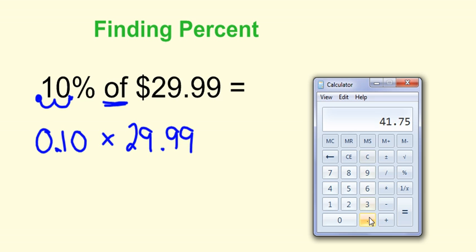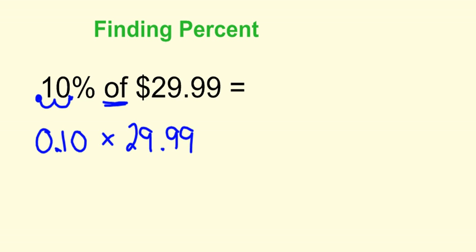If you wanted to put this into your calculator, you would have decimal one zero times $29.99. It's going to give us $2.99. Since we're dealing with dollars, we can round this to two decimal places. So it's going to round to $3 even.